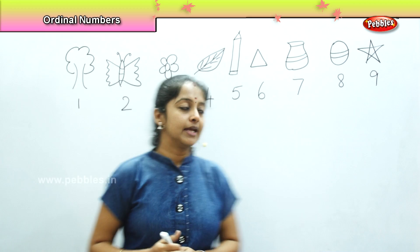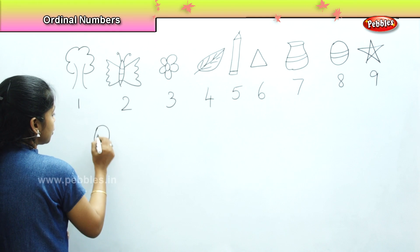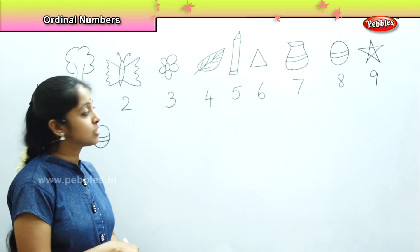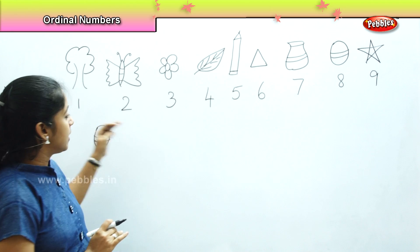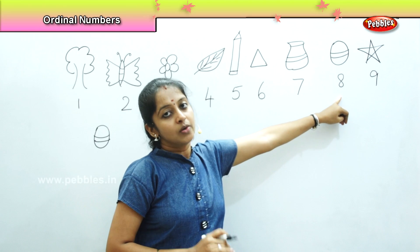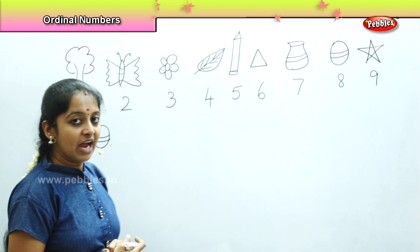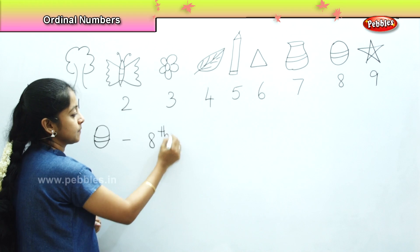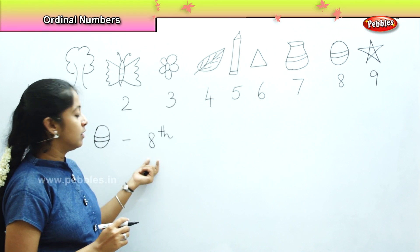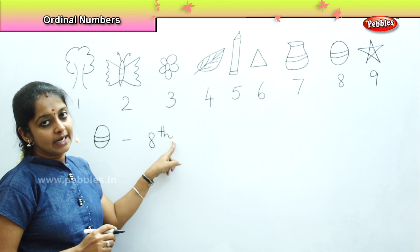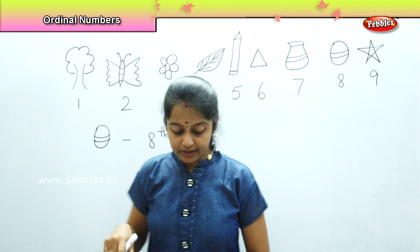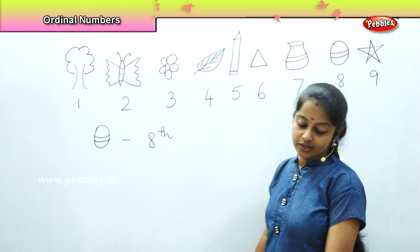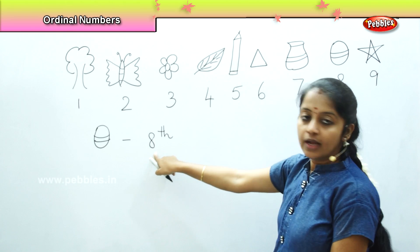Now if I tell you I want to know the position of the ball — where is the ball placed on this board? The ball is placed on number 8. So how will you tell? We say the ball is placed in the 8th position. Whenever we mention a position, we add TH on top of the number to tell the exact position of that object. So it is standing on the 8th position.